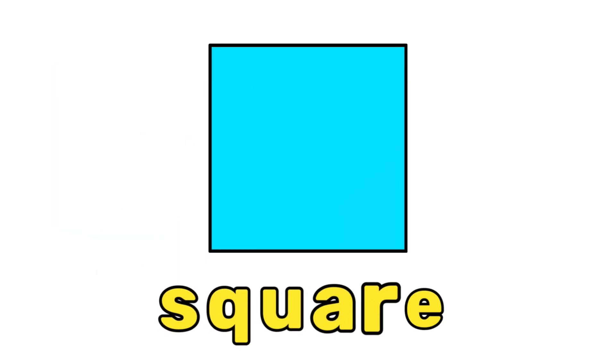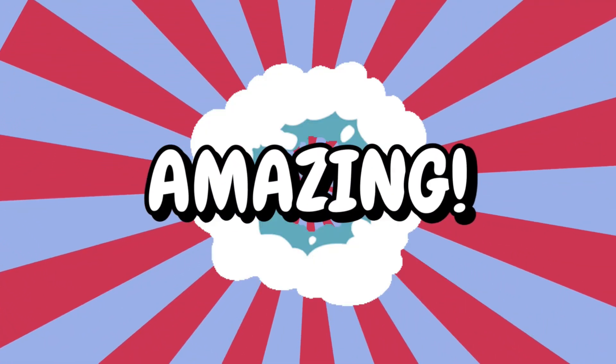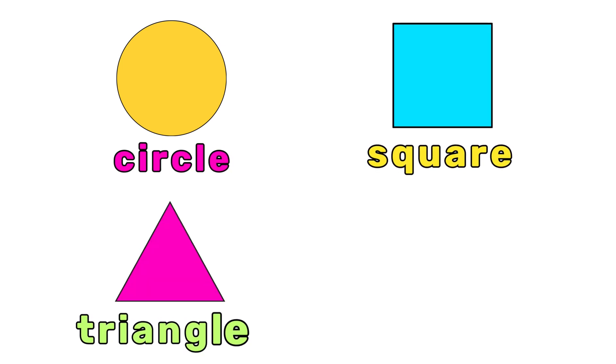And this one? You're right! It's a square. Amazing, everyone! You learned circle, square, triangle, and rectangle.